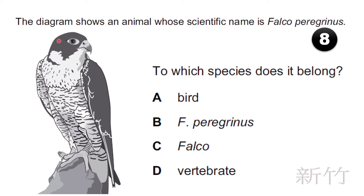The diagram shows an animal whose scientific name is Falco peregrinus. To which species does it belong? Bird is the common name, Falco is the genus, and vertebrate refers to the phylum. The species name is peregrinus, so Falco peregrinus is the answer.